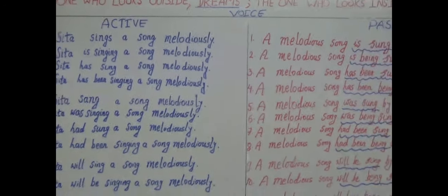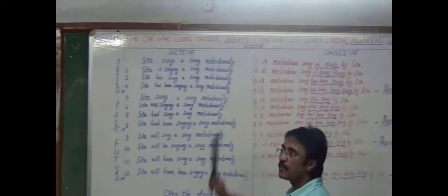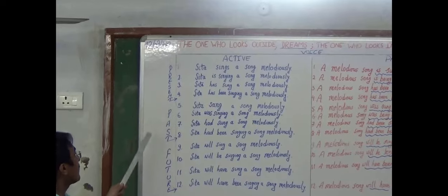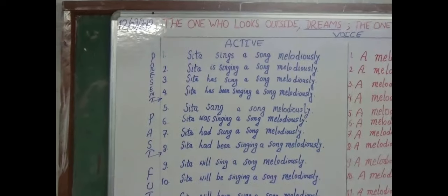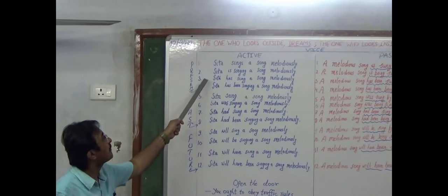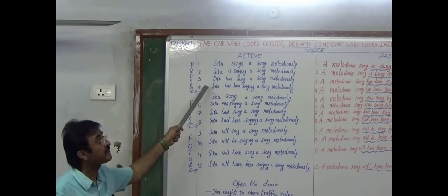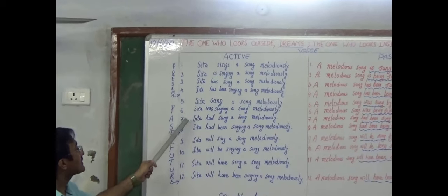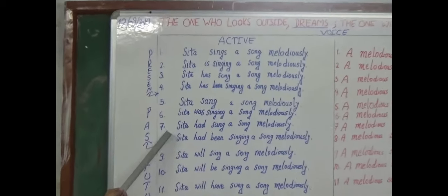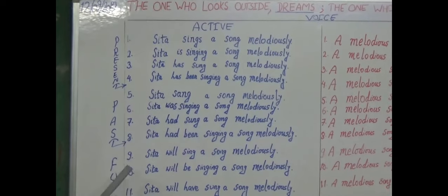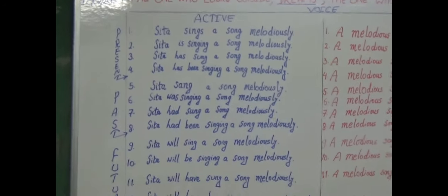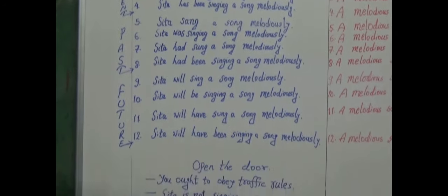Dear young friends, that day we learned about tense. Now we learn about voice — present, past, and future. Present having simple present form, present continuous, present perfect, present perfect continuous. Past having simple past, past continuous, past perfect, past perfect continuous. Simple future, future continuous, future perfect, and future perfect continuous.